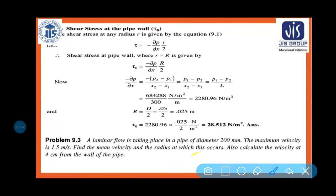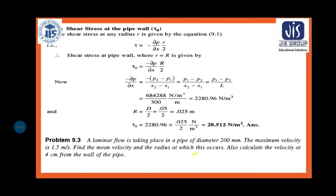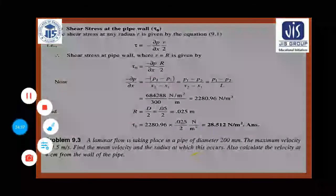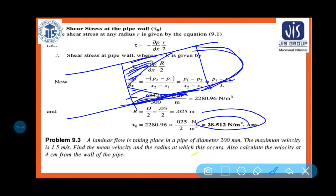Substituting: -(dP/dx) = 2280.98 and R/2 = 0.025/2. Therefore τ₀ = 28.5 N/m² is the shear stress at the pipe wall. The maximum shear stress occurs at the pipe wall, and the velocity distribution is parabolic with maximum at the center.